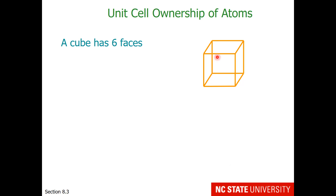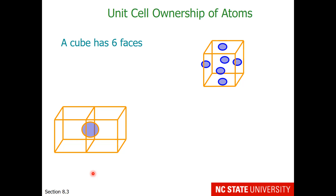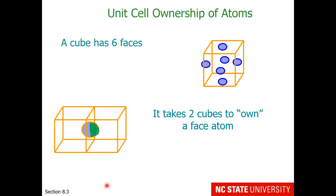A cube will have six different faces: the four sides, the top, and the bottom. If we have an atom embedded in the middle of the face, it's going to be shared between one cube and another. An atom on the face of a cube is halfway in one cube and halfway in the other, and it takes two complete cubes to own the atom.